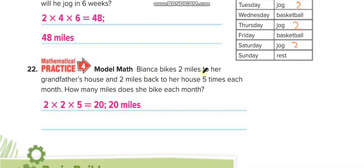Banica bikes two miles to her grandfather's house and two miles back, five times each month. So the expression is two times two times five, which equals twenty.